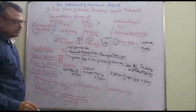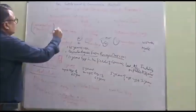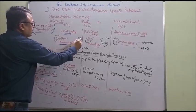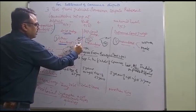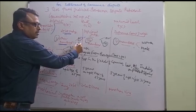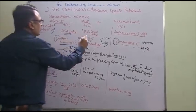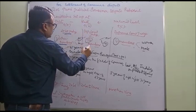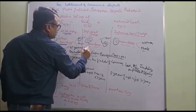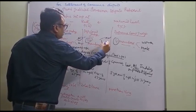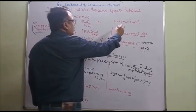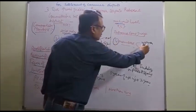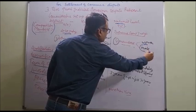Composition of the members: in District Forum, two members are there — one is a woman and another is a man. In case of State Commission, two members are there — one is a man and the other is a woman. And in case of National Commission, four members are there — one is a woman and the others are men.